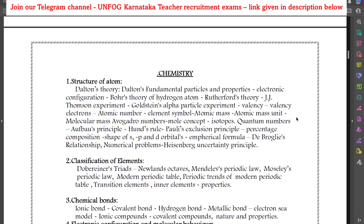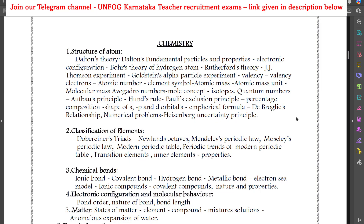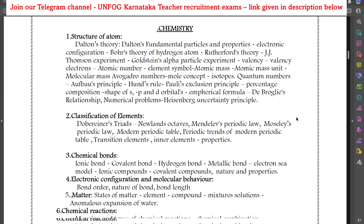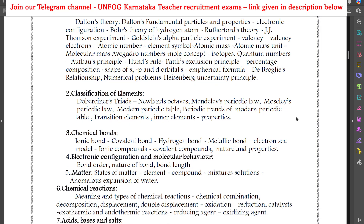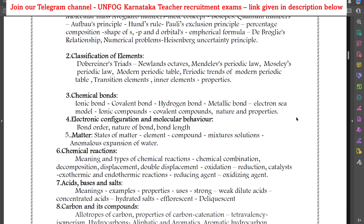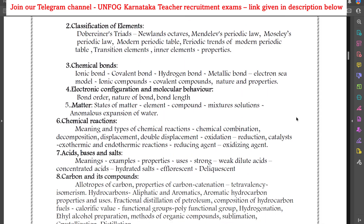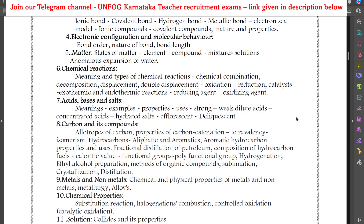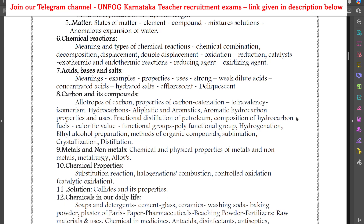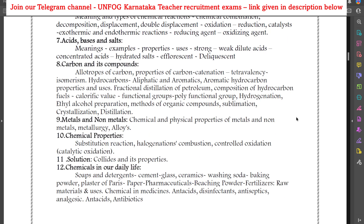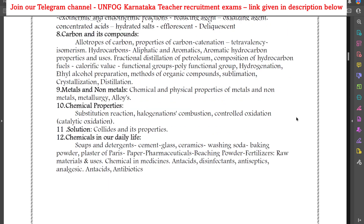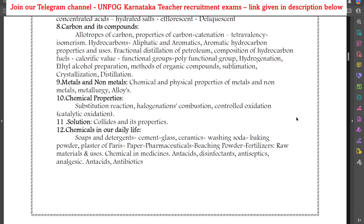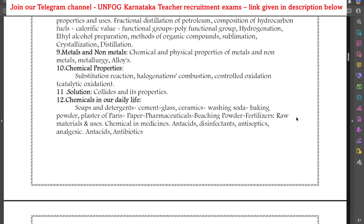Talking about chemistry, we have: structure of atom, classification of elements, chemical bonds, electronic configuration and molecular behavior, matter, chemical reactions, acids, bases and salts, carbon and its compounds, metals and non-metals, chemical properties, solution, and chemicals in our daily life.